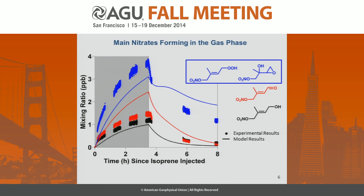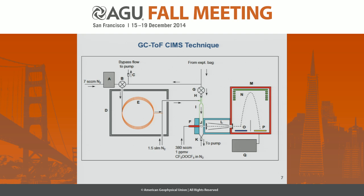The main nitrates forming in the gas phase were exactly as expected, with the same chemistry as previously described. The key challenge in this study is being able to differentiate between the nitroxyhydroperoxide and the nitrate hydroxy epoxide, because they come out at the same mass on our instrument. We need a way to differentiate between these two compounds, so we used the GC-TOF-SIMS technique.